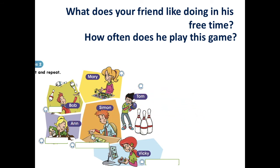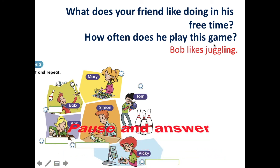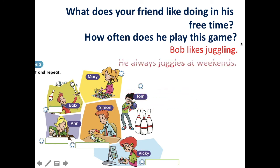Check it. Compare the answers. Bob likes juggling. I hope you didn't forget to put S over here — Bob is he, as you remember, so he likes juggling. We use the verb with -ing after 'like.' How often does he play this game? He always juggles at weekends. Good luck to you.